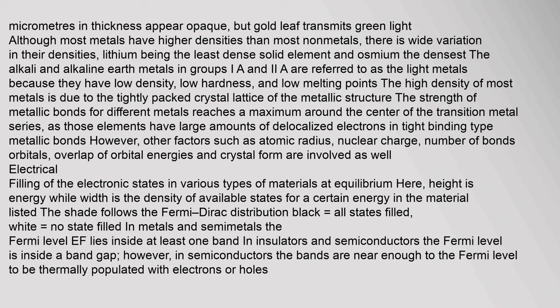Although most metals have higher densities than most non-metals, there is wide variation — lithium being the least dense solid element and osmium the densest. The alkali and alkaline earth metals in groups Ia and IIa are referred to as light metals because they have low density, low hardness, and low melting points. The high density of most metals is due to the tightly packed crystal lattice of the metallic structure.